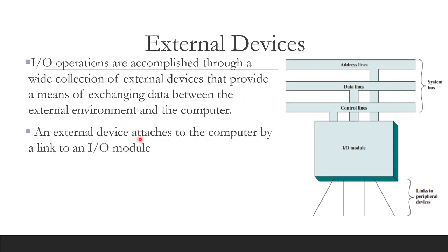An external device attaches to the computer by a link to an IO module. The external device is not directly connected to the computer — the IO module is connected to the computer. We use the system bus to communicate with the computer. The system bus has three types of lines: address line, data line, and control line. These three lines connect to the external device through the mediator called the IO module.